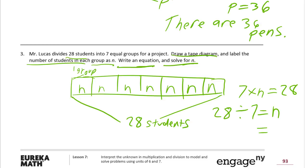So n equals 4, I just said it. And then our statement is: there are 4 students in each group.